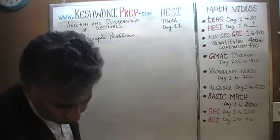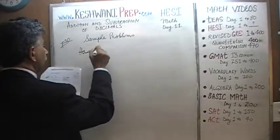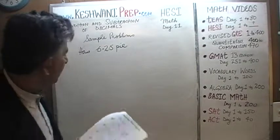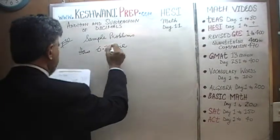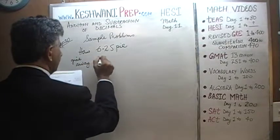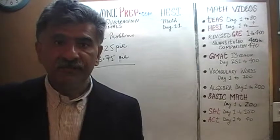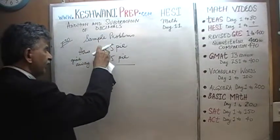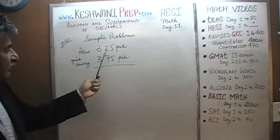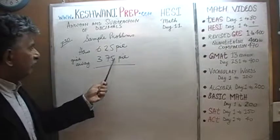We are told that the person has pi. She has 6.25 pi and has to give away 3.75 pi. Question is, once she has done that, what is she left with? Well, if it helps you, ignore the decimal point. Just subtract 375 from 625. We'll delete the decimal at the end. 5 minus 5 is 0.